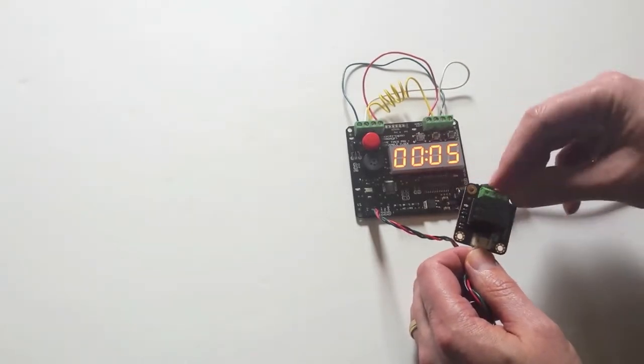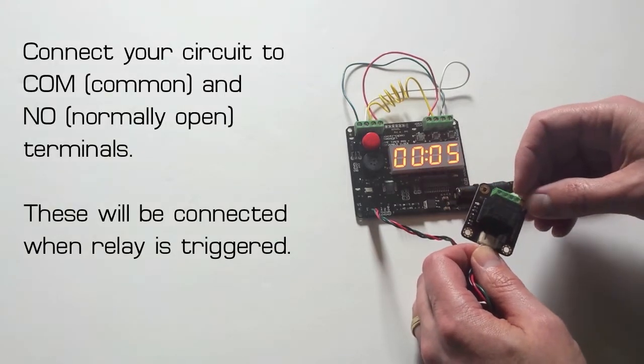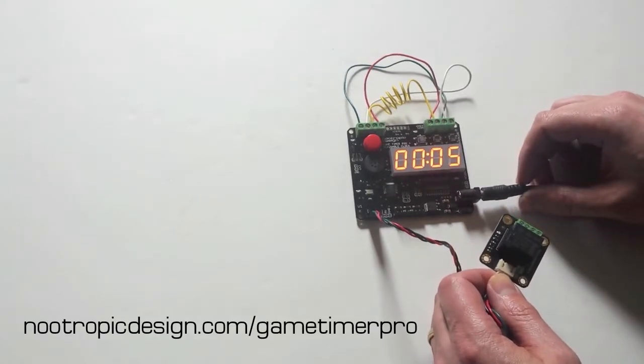Otherwise, just connect your external device to the common connection and the normally open connection, and when the relay is triggered it'll connect those two wires and you can trigger your external device.